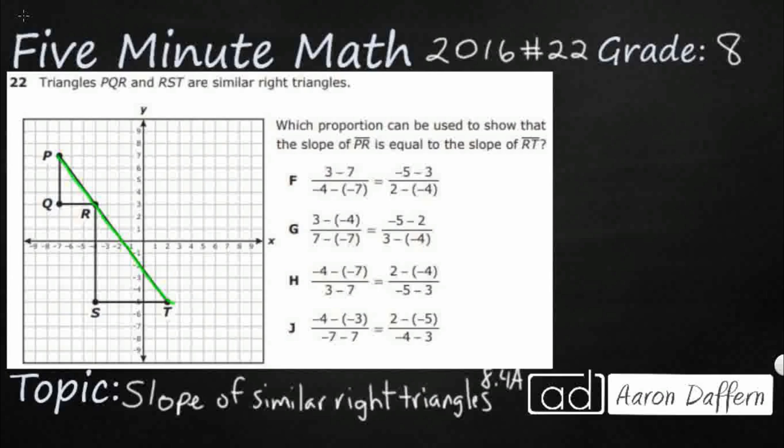So we are going to need slope. Remember, our slope is our change in y — that's the rise — over the change in x, which is the run. So we've got three different points here: p, r, and s.